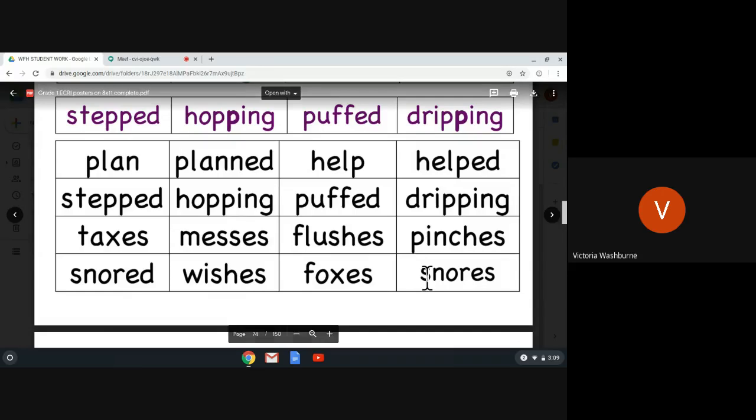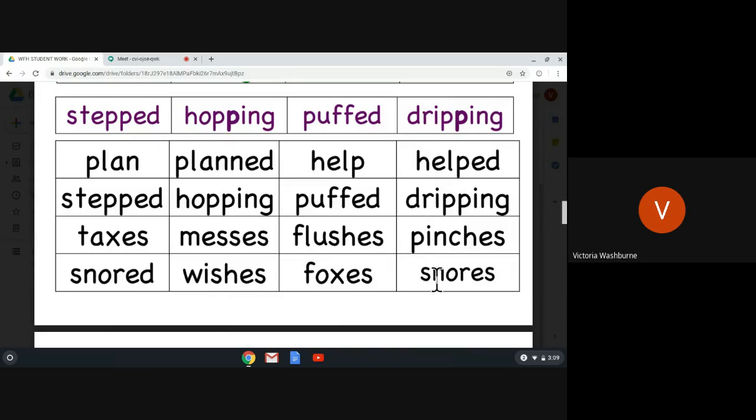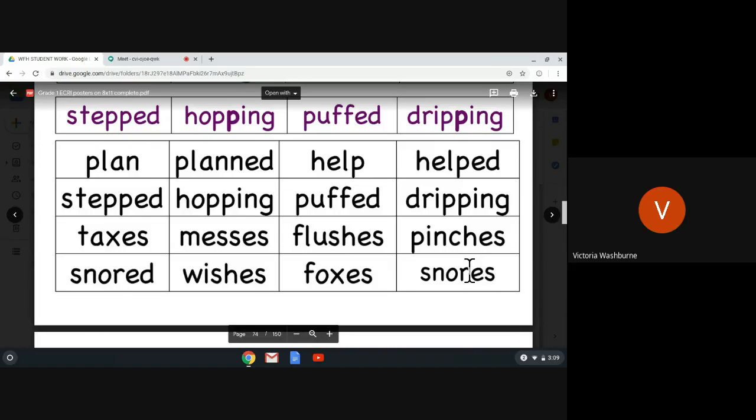Same thing here. We're going to leave off the E-S for a second. Sound, sound, sound, sound. Blend: P-I-N-C-H: pinch. That's another diagraph. C-H always says CH. Remember that you can pat your chin if you want to remember to say CH, CH. And we'll put the S on the end: pinches, pinches.